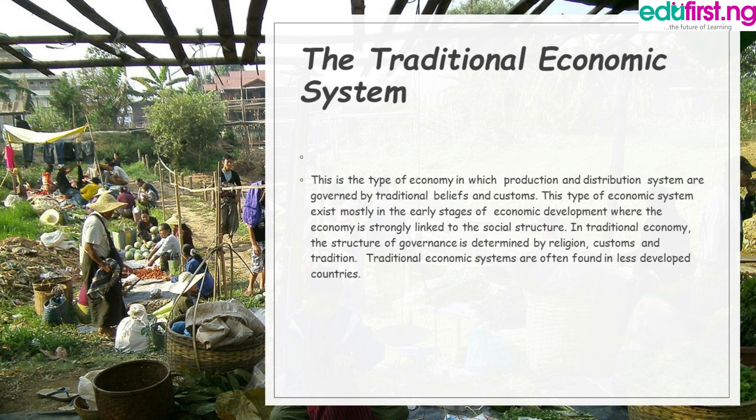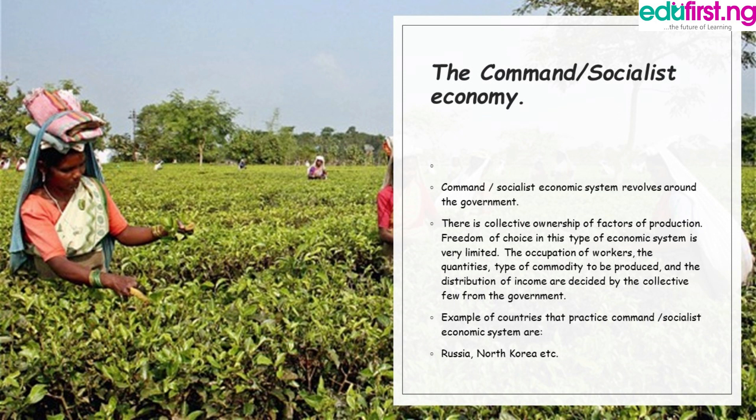The traditional economic system is the type of economy whose production and distribution system are governed by the tradition and belief system of that particular economy. This type of economic system is mostly found in the early stages of economic development, where the economy is strongly linked to the social structure. Unfortunately, traditional economic systems are often found in the less developed countries of the world.